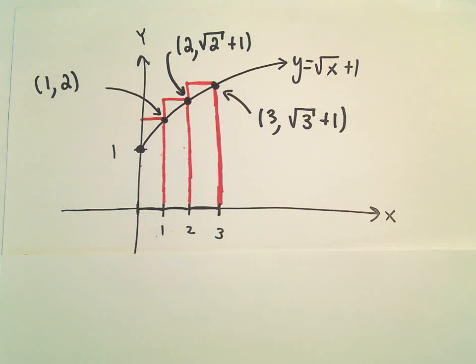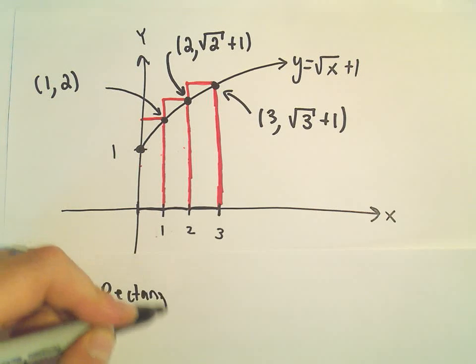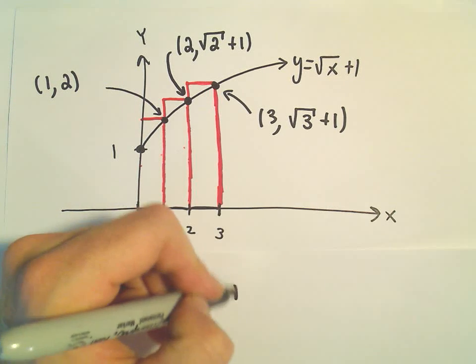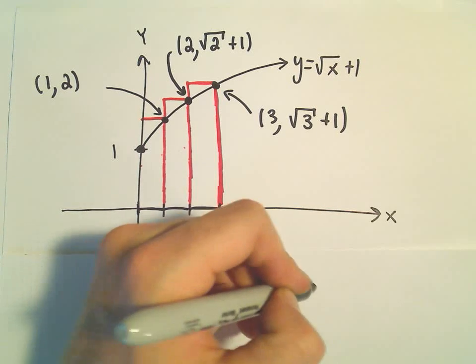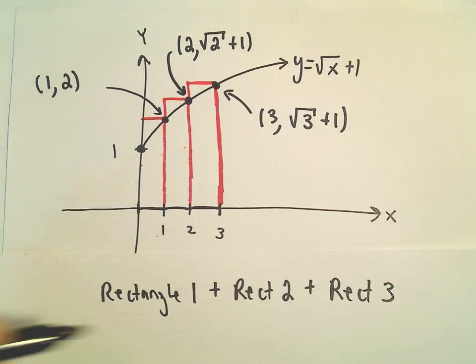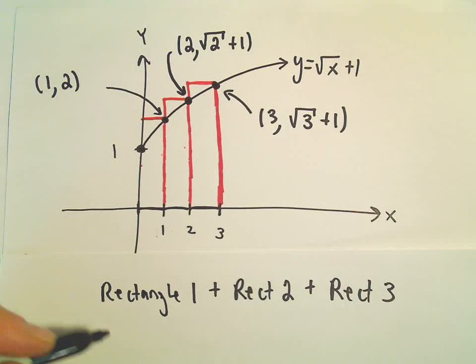What we're going to do now is find the area of the first rectangle. We're going to take the area of rectangle 1 plus the area of rectangle 2 plus the area of rectangle 3, and that's going to be our approximation.